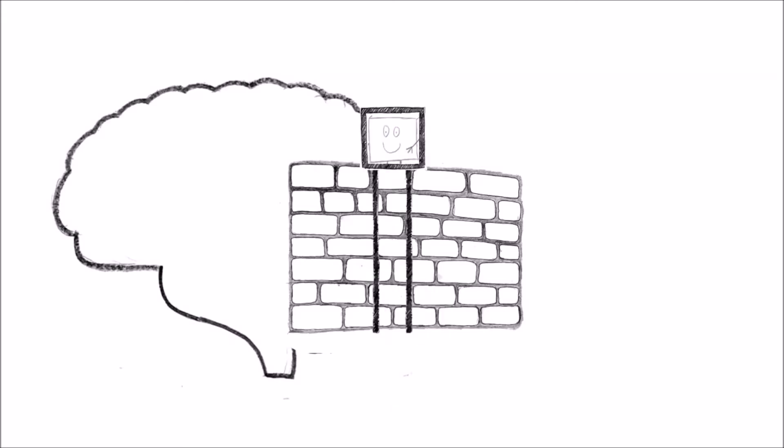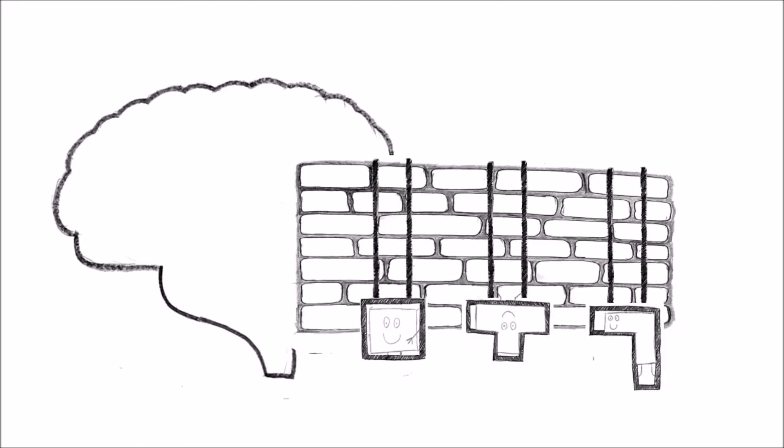The blood-brain barrier has a shuttle system for things that are necessary for brain function, like sugar and amino acids. These shuttles are called uptake transporters.